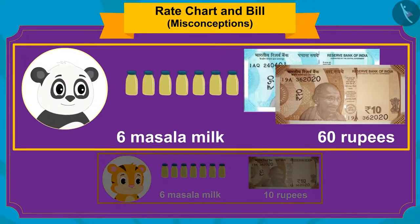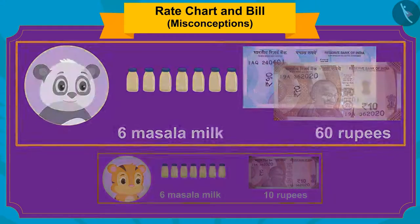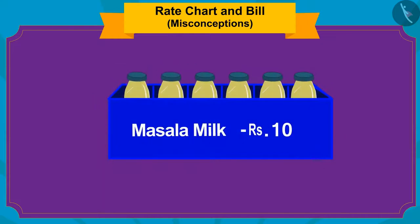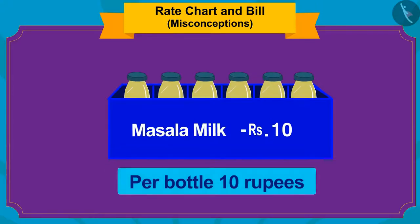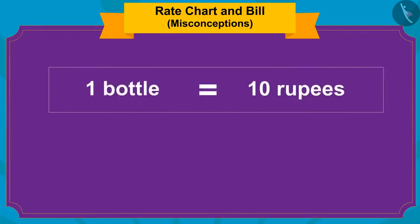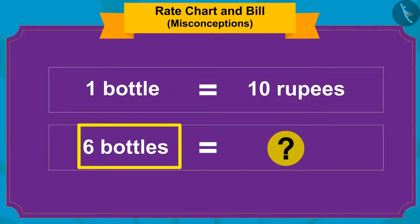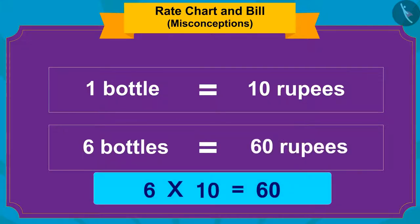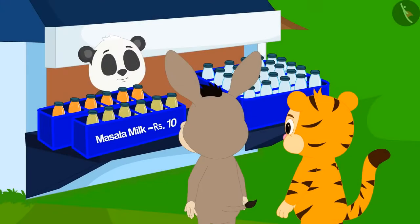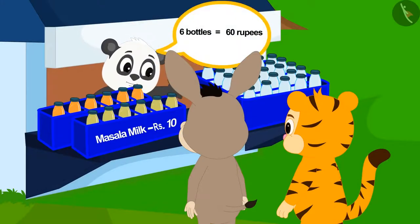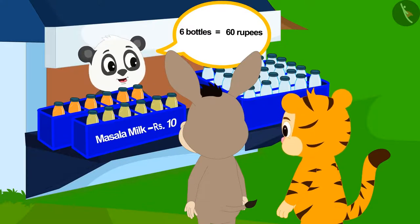Yes! Golu is right! Even though there were six bottles of spiced milk in the tray, the price he wrote was the price per bottle. In this way, if the price of one bottle is rupees 10, what will be the cost of six bottles? That's right! The price of six bottles will be 6 multiplied by 10, or 60 rupees. Golu explained this to Sher Khan and Sher Khan understood it.